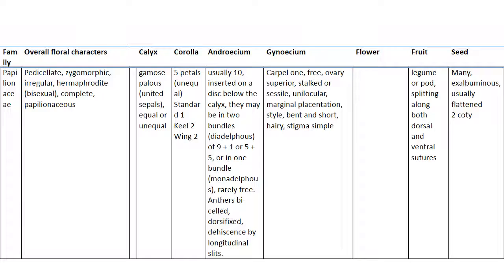Gynoecium one carpel, free. Ovary is superior, stalked or sessile, unilocular, marginal placentation. Style bent and short, hairy. Stigma simple. Fruits are legume or pod, splitting along both dorsal and ventral sutures. Seeds are many, exalbuminous, usually flattened, with two cotyledons. Flowers are like papilionaceous.